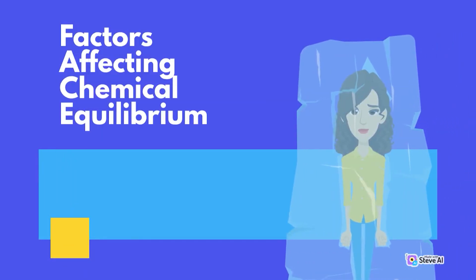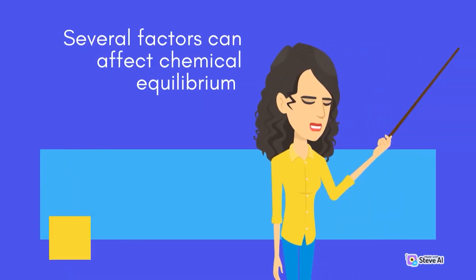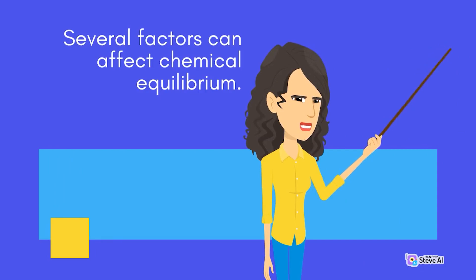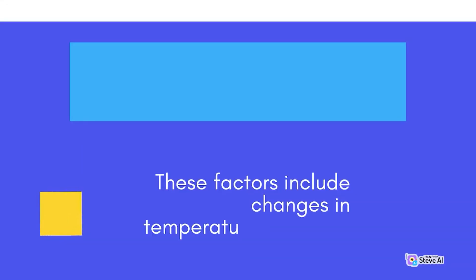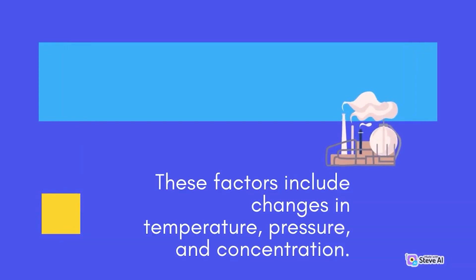Several factors can affect chemical equilibrium. These factors include changes in temperature, pressure, and concentration.